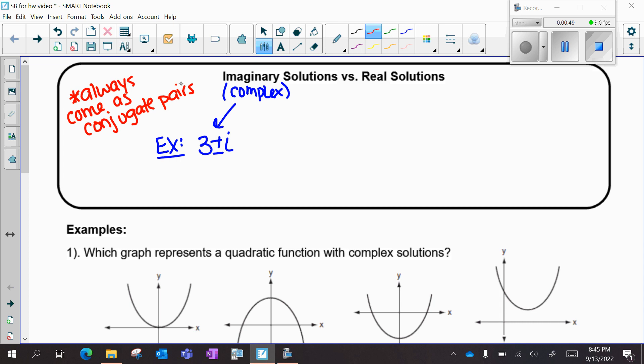Imaginary solutions have no x-intercepts. Real solutions are x-intercepts, like x equals 2, x equals negative 4.